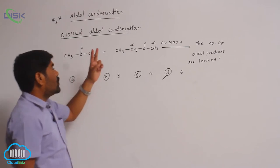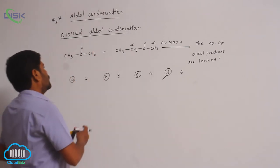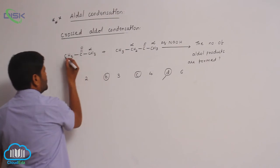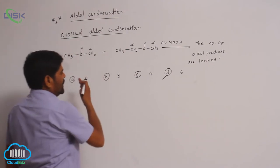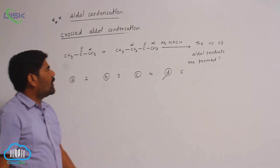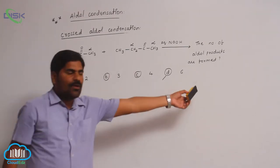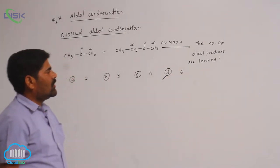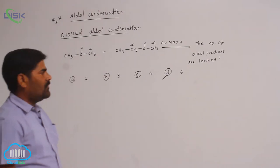Here, 2 products are obtained from the second compound because it has only one alpha carbon, and it is also identical. That is the reason why the total number of products formed is 6 — all crossed aldol products are formed.